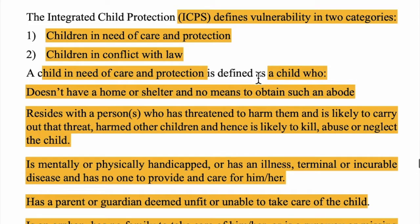The Integrated Child Protection Scheme, ICPS, classifies vulnerability into two main categories. The first is Children in Need of Care and Protection, and the second is Children in Conflict with Law. We will now go into the details of each category.